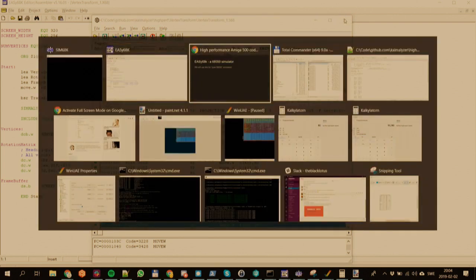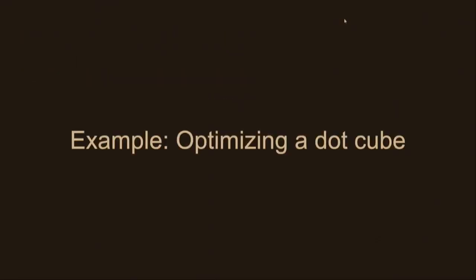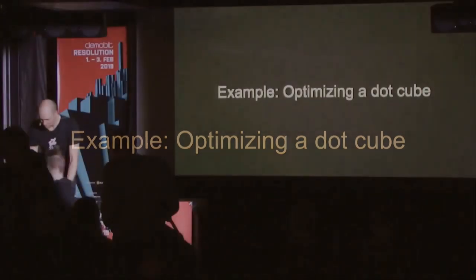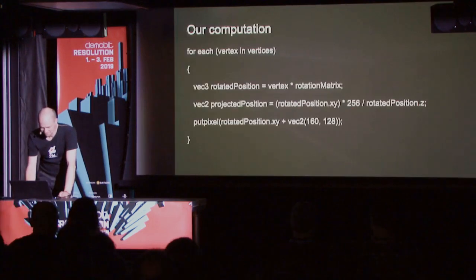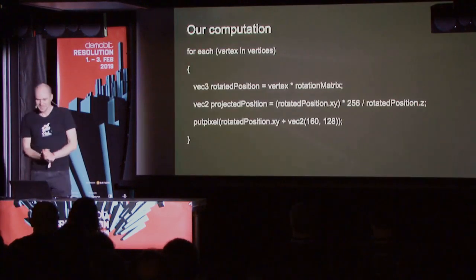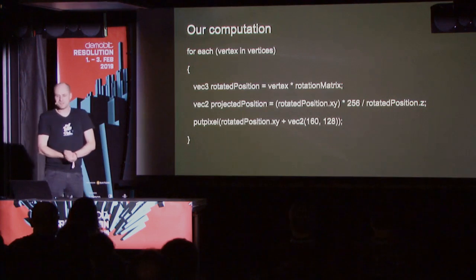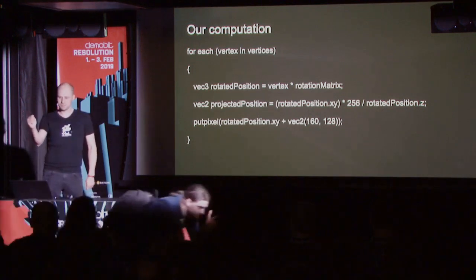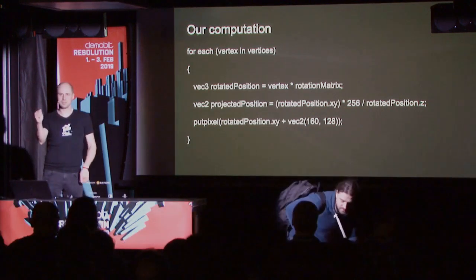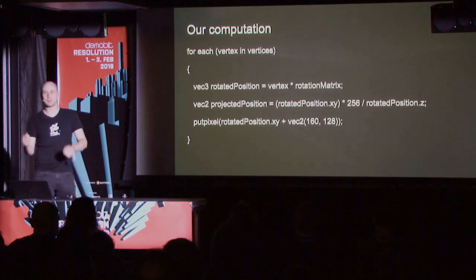I've tried to optimize the dot cube, and this is what we're going to be looking at for the next 20 minutes — the same piece of code with minor tweaks. Here are the steps needed to get a dot cube spinning: take a vertex, rotate it, project it, scale it a little bit, and plot a pixel.